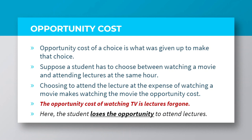Now, let us cite an example. Suppose a student has to choose between two alternatives, such as attending a lecture or watching a movie at the same hour. If this student actually attends the lecture, then the opportunity cost of this action is watching a movie. What this means in practice is that by attending the lecture, the student gave up the opportunity to watch the movie, and that comes at a cost, hence the term opportunity cost.